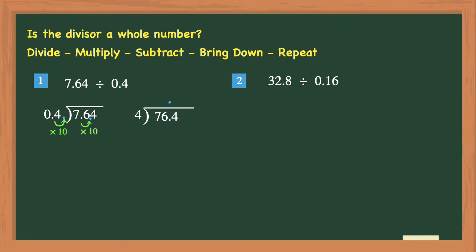We'll start by seeing how many groups of 4 can be divided into 7. And 4 goes into 7 one time. Next, you'll multiply 1 times 4 to get 4. Then you'll subtract. And 7 minus 4 is 3. Next, you'll bring down the 6. And then you'll repeat the process all over again.